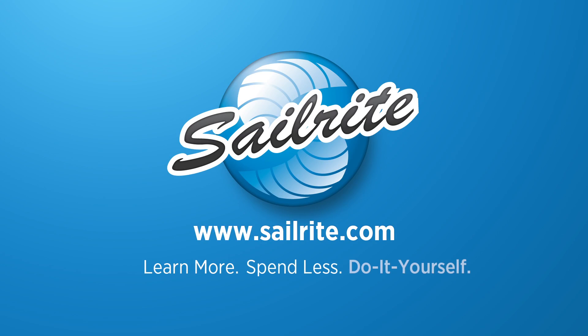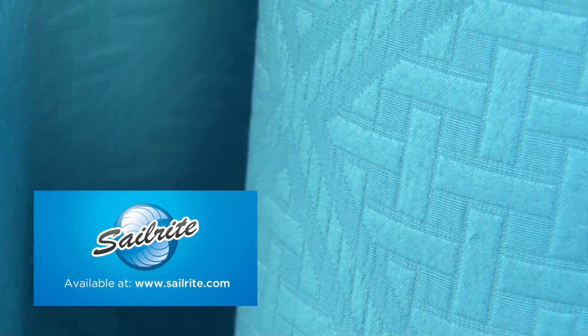This video is brought to you by Sailrite. P. Kaufmann Outdoor Paragon Caribbean Blue Fabric is a geometric matelus fabric from the Rain or Shine collection.